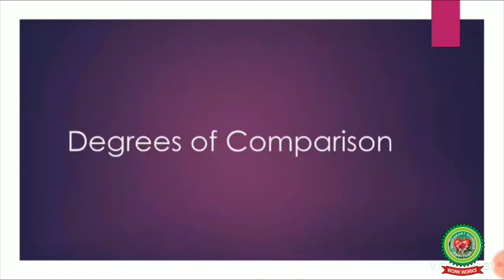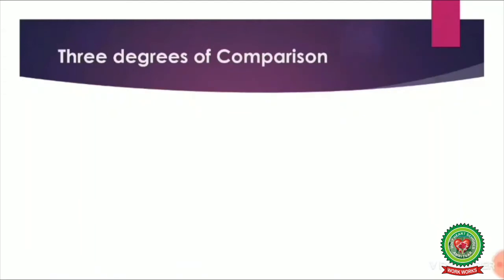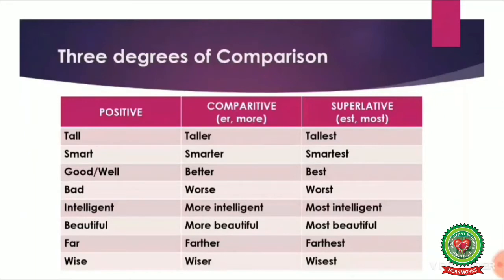Now let us do degrees of comparison — you have been doing this in your smaller classes, so let us quickly recapitulate. There are three degrees of comparison: positive, comparative, and superlative. Here are some examples: tall, taller, tallest; smart, smarter, smartest; good/well, better, best; bad, worse, worst; intelligent, more intelligent, most intelligent; beautiful, more beautiful, most beautiful; far, farther, farthest; wise, wiser, wisest.